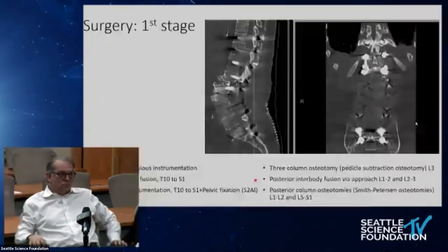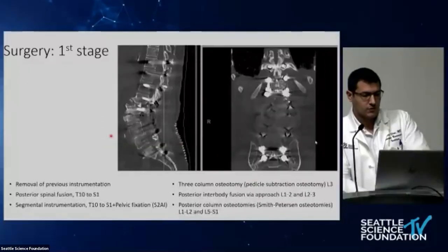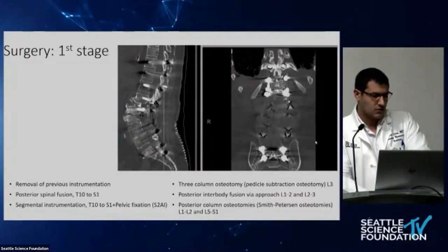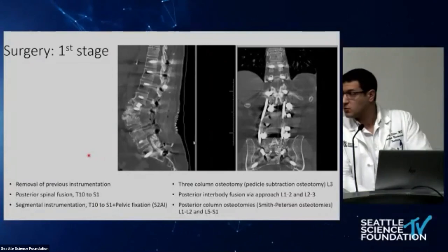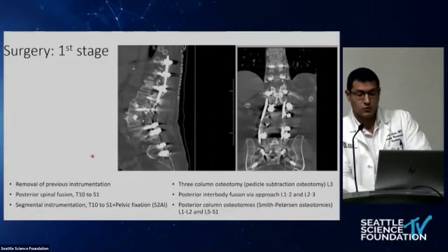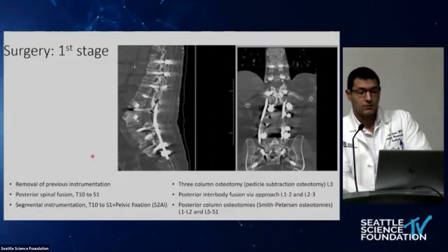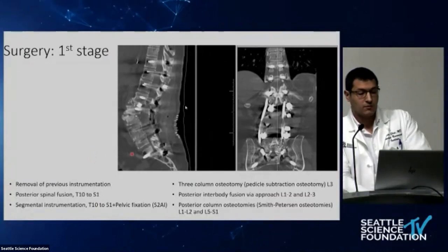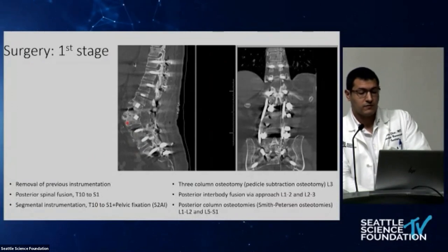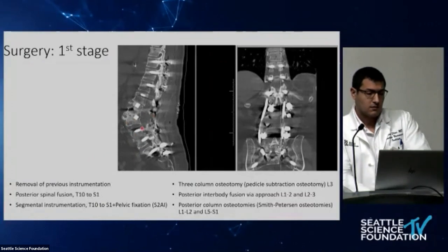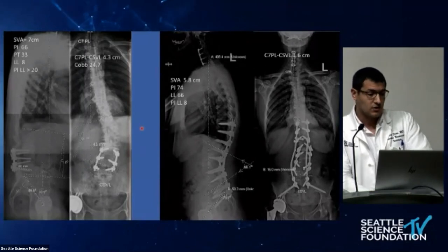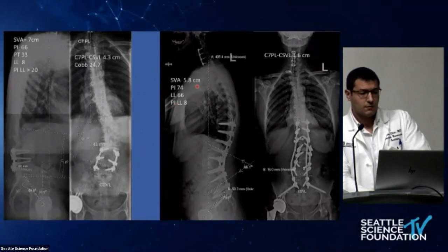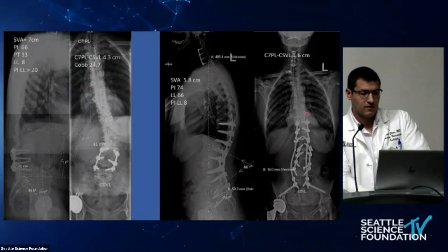Moving to the post-op: Stage one involved removing the previous instrumentation, performing posterior spinal fusion from T1 down to S1 all the way to the pelvis with S2AI screws. They performed three-column osteotomies over L3 — a Schwab grade 4 osteotomy — and a TLIF one level above. Post-op scoliosis x-rays show SVA now 5.6 (was 7), PI-LL mismatch now 8 (was above 20), with visible improvement in coronal imbalance.